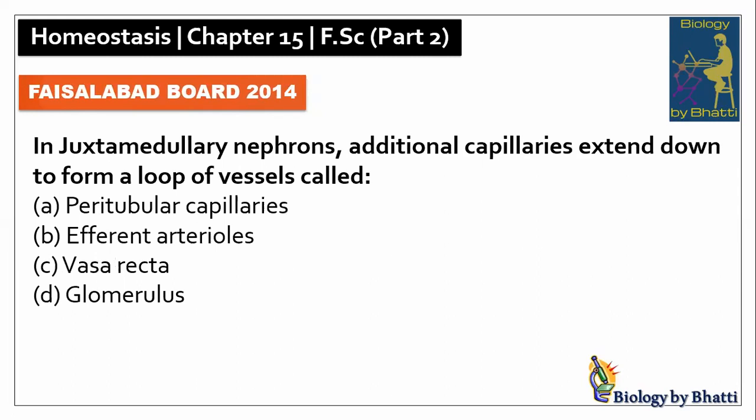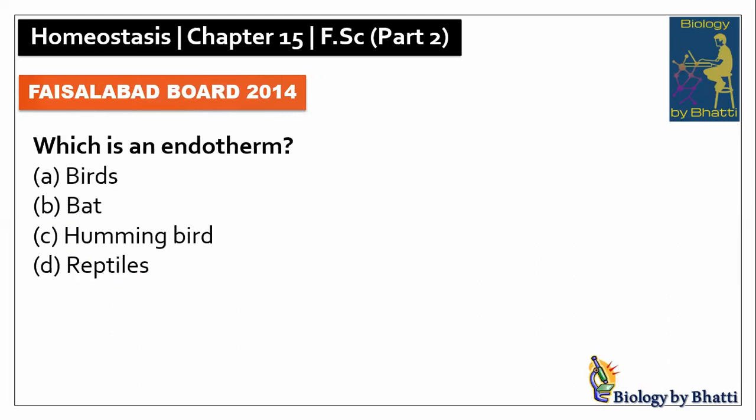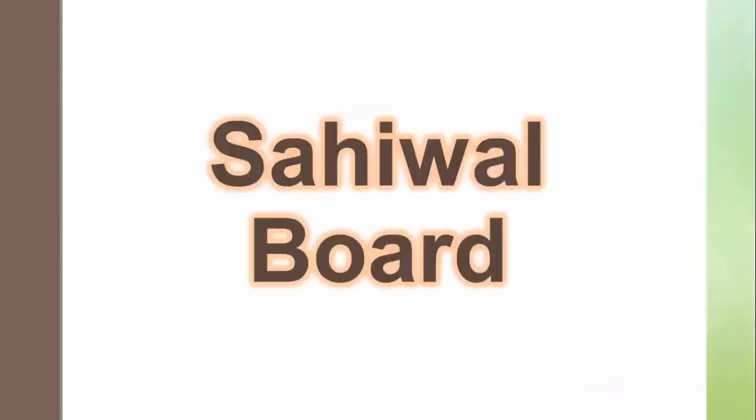Faisalabad Board 2014: in juxtamedullary nephrons, additional capillaries extend down to form a loop of vessels called vasa recta, so the answer was C option. In this paper, which is an endotherm — birds are endotherms, so the answer is A option.